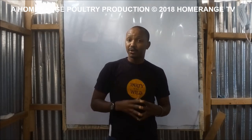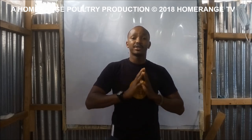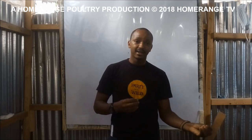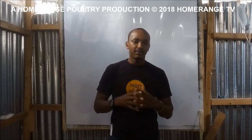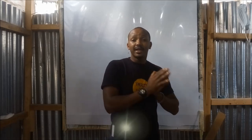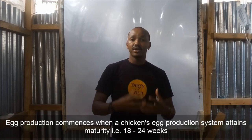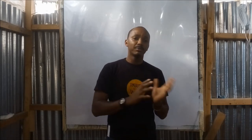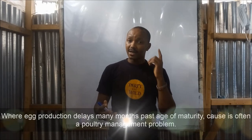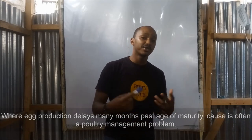Our video today is going to focus on the issue of egg production from your chicken. Naturally, a chicken produces eggs once its egg reproduction system has matured and it starts releasing the egg. For most breeds that is usually between 18 weeks of age and around 20 to 24 weeks of age. Naturally a chicken should start giving you eggs within this time. But what about when the chicken has surpassed that age and is still not giving you eggs? That's when you realize there is a management problem.